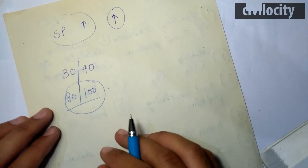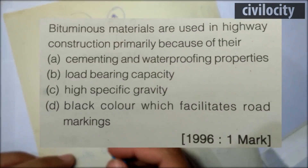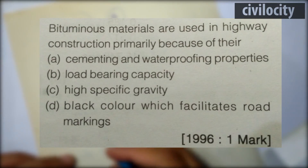This question says: 'The bituminous materials are used in highway construction primarily because of their — A: cementing and waterproofing properties, B: load bearing capacity, C: high specific gravity, or D: black color which facilitates road markings.' The last option cannot be true because we don't use bitumen only for its black color.